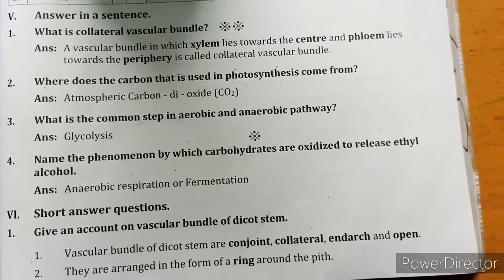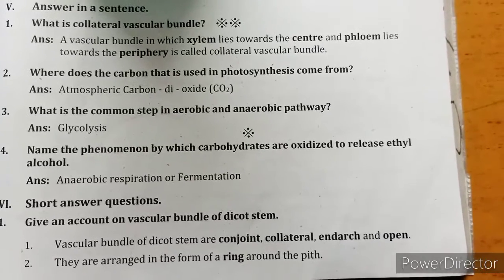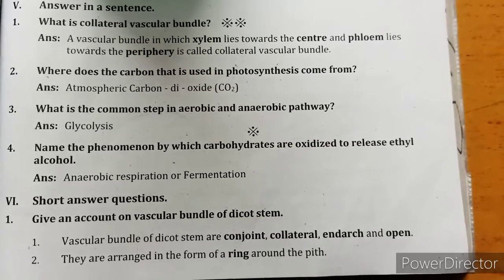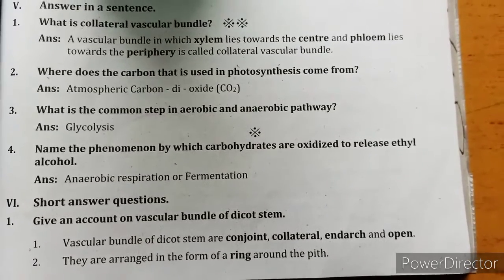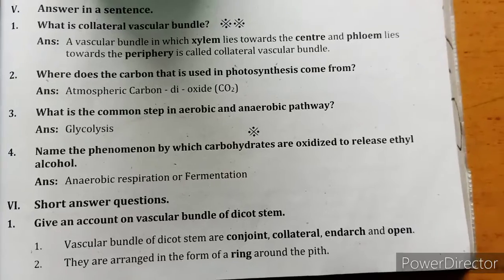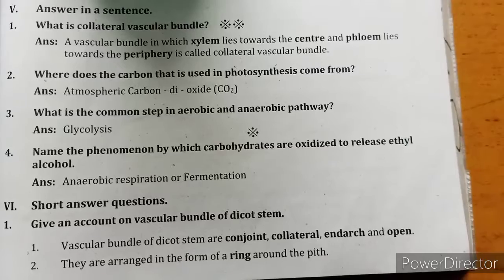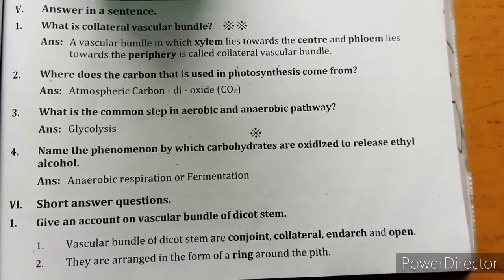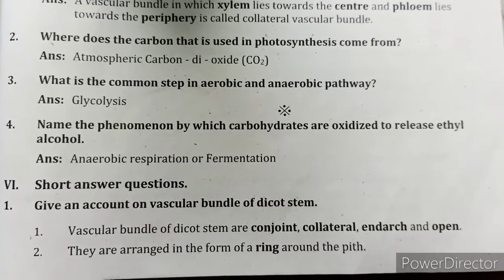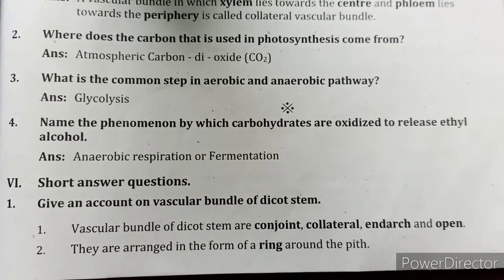Where does the carbon used in photosynthesis come from? Atmospheric carbon dioxide, CO2. What is the common step in aerobic and anaerobic pathways? Glycolysis. Name the phenomenon by which carbohydrates are oxidized to release ethyl alcohol — anaerobic respiration or fermentation.